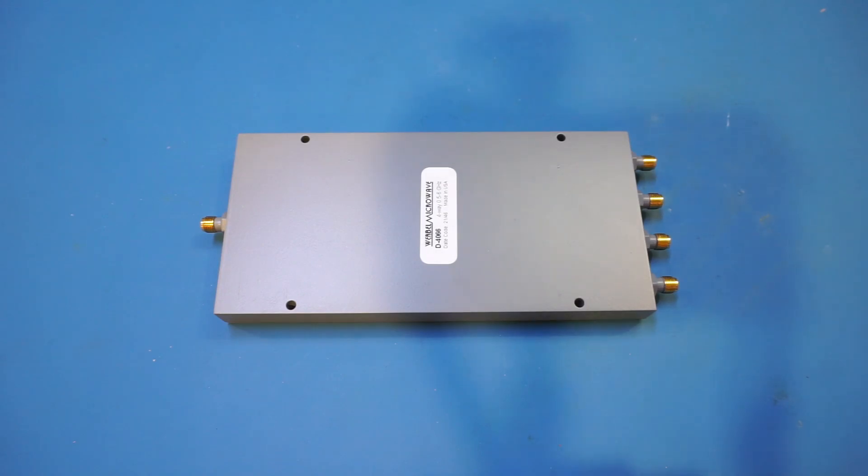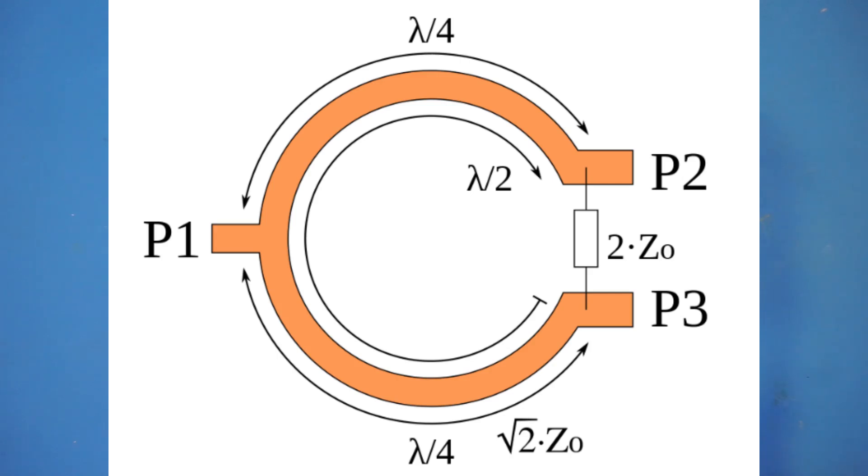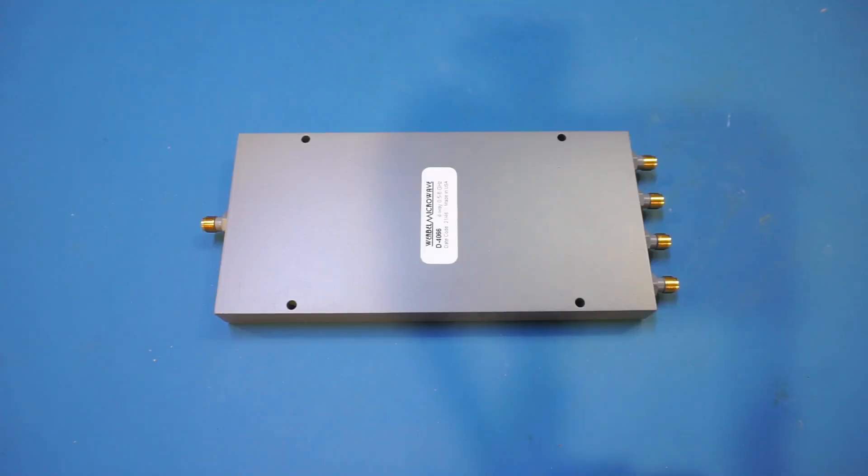Wilkinson dividers use quarter wave transmission lines and in ideal situation there is no resistive loss. Therefore in a one to two split, each port gets half of the original signal which is 3 dB below the input. While there is an isolation resistor at the output, because the signals at either side of the outputs are in phase, there is no current flowing through the resistor. Therefore Wilkinson dividers can handle much higher power. Another key advantage of a Wilkinson divider is the high isolation among the ports. It is not uncommon for Wilkinson dividers to achieve at least 20 dB isolation.